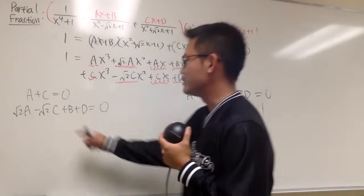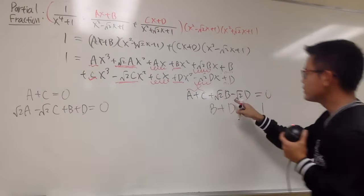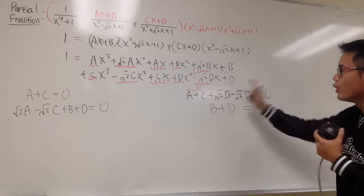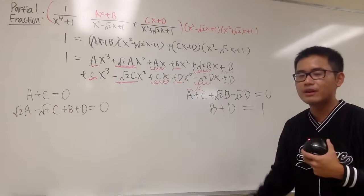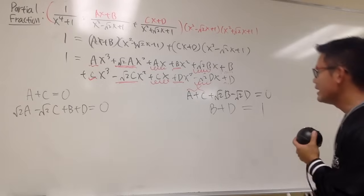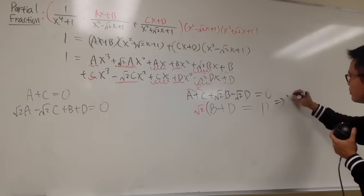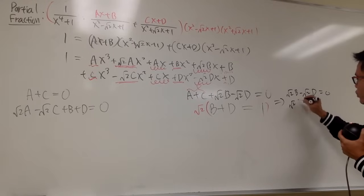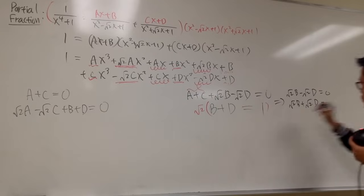It's actually pretty easy. Since a plus c equals 0, that simplifies things down to 2 equations with 2 unknowns. I'll multiply everything by square root of 2. This gives square root of 2b minus square root of 2d equals 0, and square root of 2b plus square root of 2d equals square root of 2. Combining, 2 square root of 2b equals square root of 2.